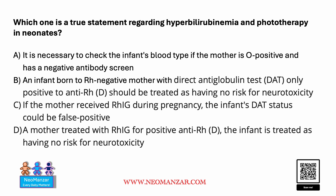Choice B: an infant who is born to an RH negative mother with a DAT only positive for anti-D should be treated as having no risk factor for hyperbilirubinemia and neurotoxicity. This looks like a right answer, but let's go through C and D before we commit on B.